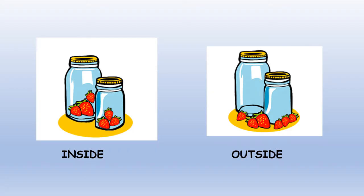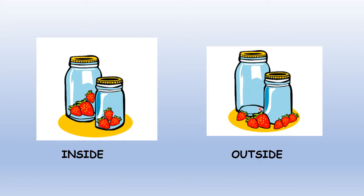Kids, here you can see two pictures — a big jar and a small jar. Inside the jars, you can see strawberries. The strawberries are inside the jar. And here the strawberries are outside the jar. Here inside and here outside. Inside-outside.